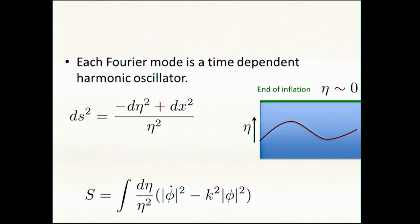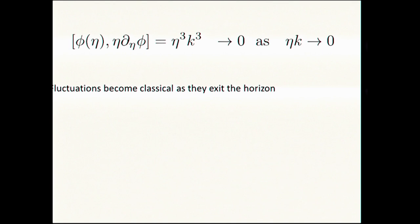The theory behind this is extremely simple. Inflation is approximated by de Sitter spacetime. We take all the fluctuations, Fourier decompose them, and each Fourier mode is governed by a Lagrangian which is simply the Lagrangian of a harmonic oscillator, except that its mass is time dependent, or you can say that h-bar is time dependent in such a way that h-bar is going to zero at the end of inflation, or the oscillator is becoming more and more classical.